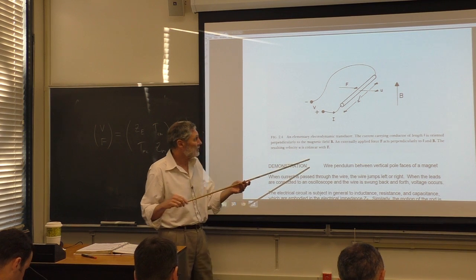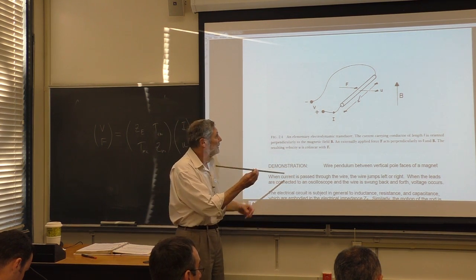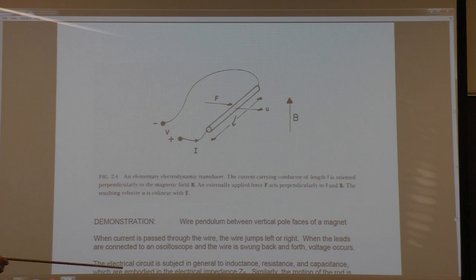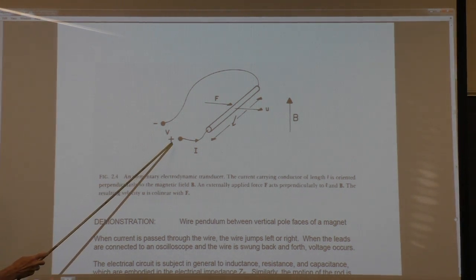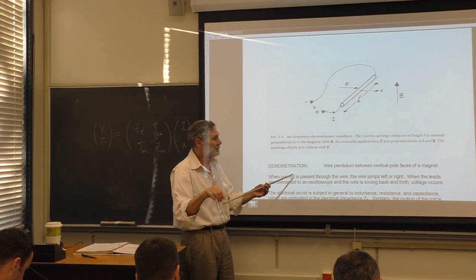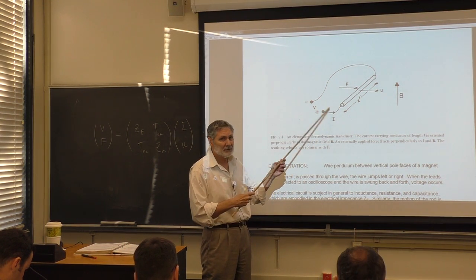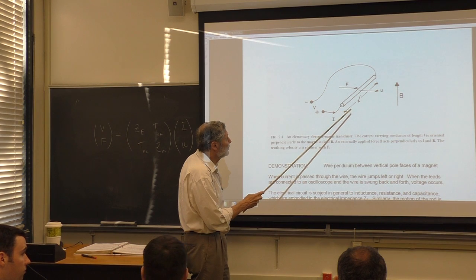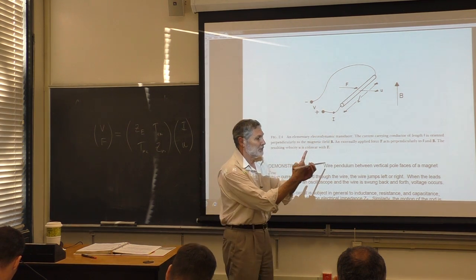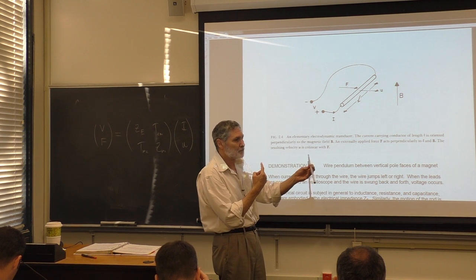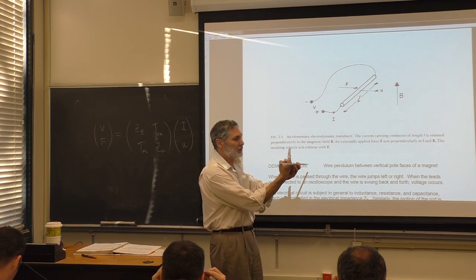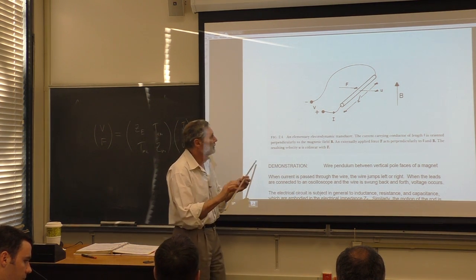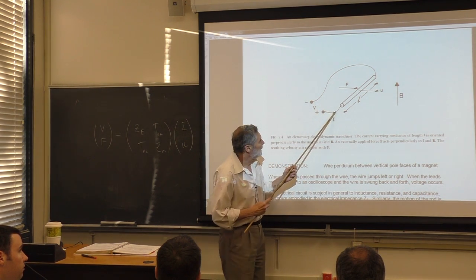Here's the simplest case: a conducting rod constrained to move in one dimension, with electrical leads connected, in a uniform magnetic field pointing perpendicular to both the rod and its direction of motion.